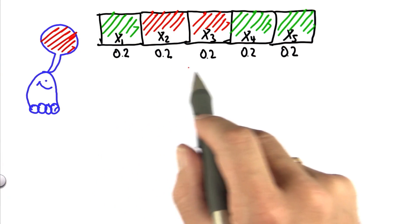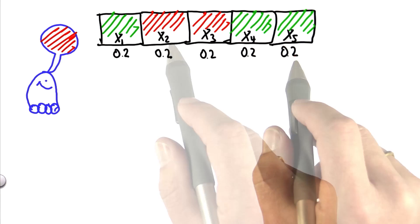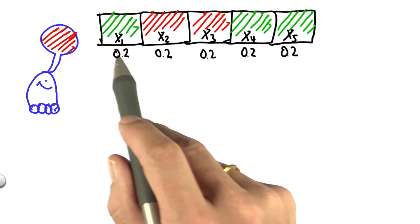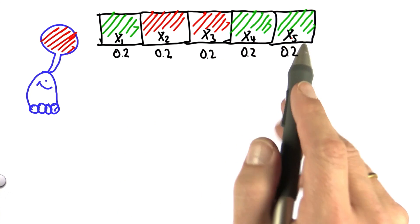How will this affect my belief over different places? Obviously, the ones for x2 and x3 should go up, and the ones for x1, x4, and x5 should go down.